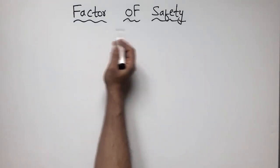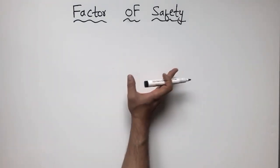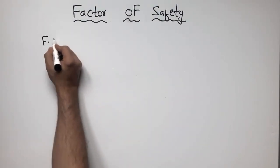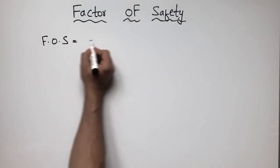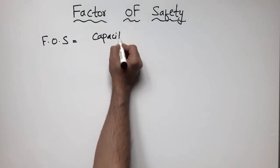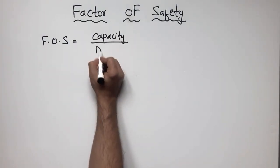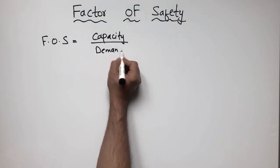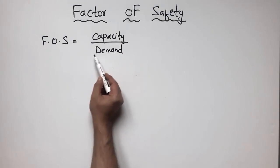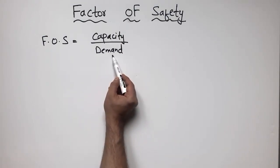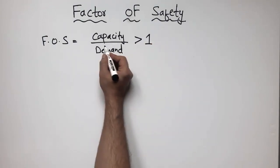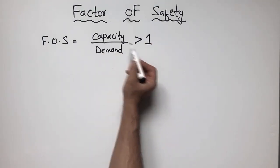In simple words, the factor of safety means at which factor your structure or machine is safe. The factor of safety is equal to the capacity divided by the demand. It shows the capacity of your structure or machine relative to the demand, and this value should always be greater than one.